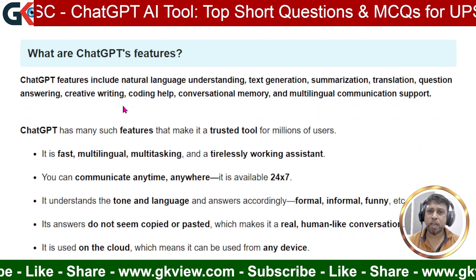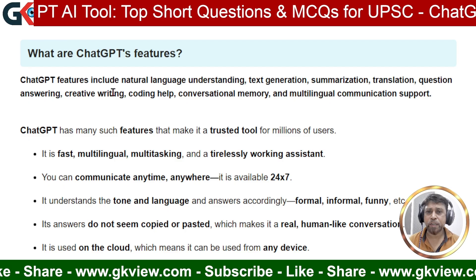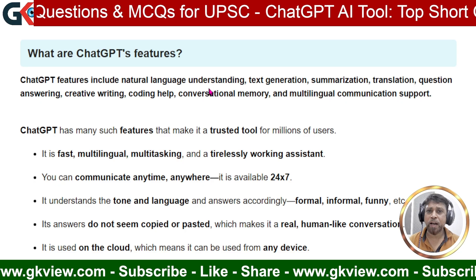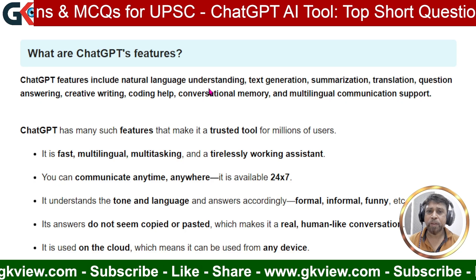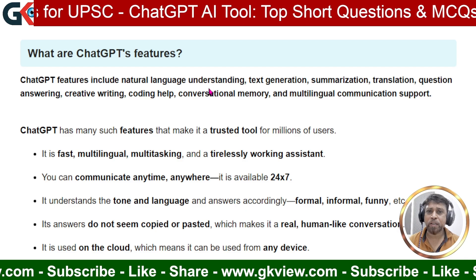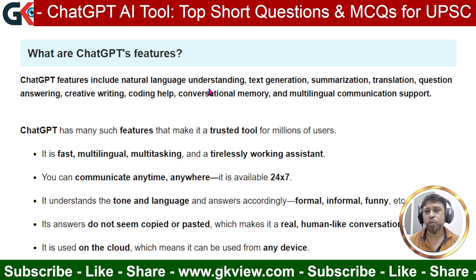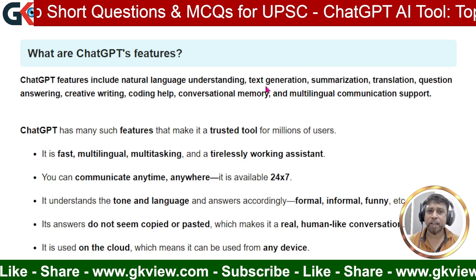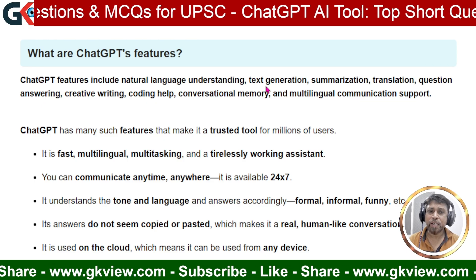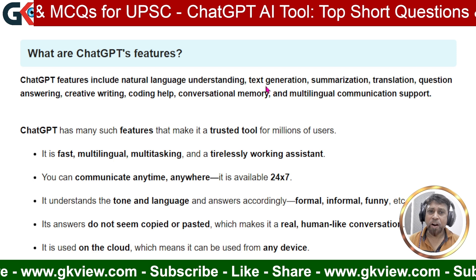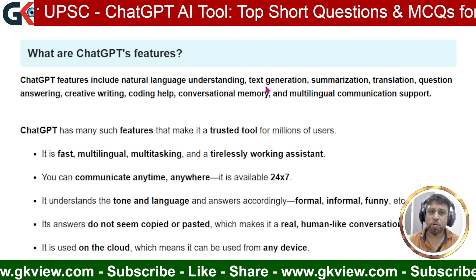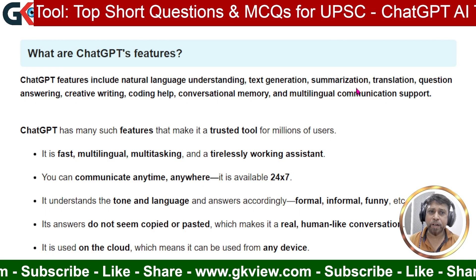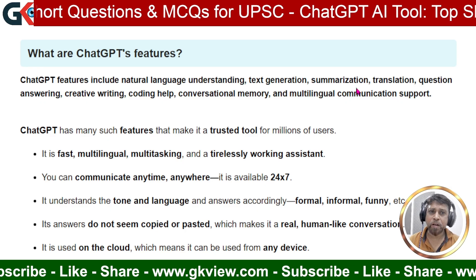The next question is: what are ChatGPT's features? ChatGPT's features include natural language understanding — it can understand whatever command or language we use. It also has text generation, meaning it can generate essays, emails, articles, blog content, and video content. Another feature is summarization — large content can be summarized into a brief paragraph.